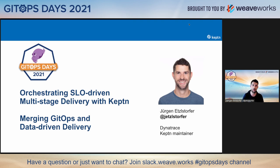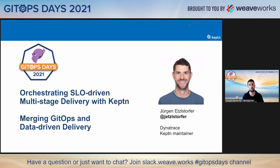Today I want to talk about how to merge the concepts of Keptn — which is more data-driven, event-based delivery — with GitHub's tools, and with this we can orchestrate multi-stage delivery with quality gates based on SLOs. There are a couple of big words there, but I will go into all of them in more detail in the next few minutes.